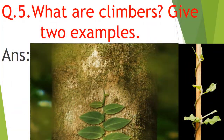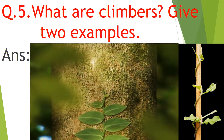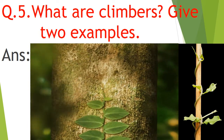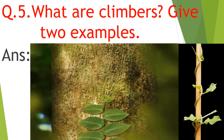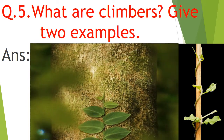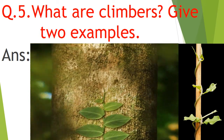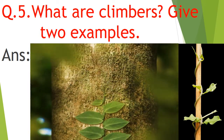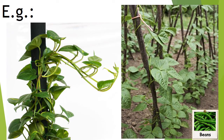Question number five: what are climbers? Give two examples. Plants having weak stems which cannot grow erect on their own are called climbers. You can see in the picture it has a weak stem and cannot grow erect on its own — those are called climbers. Example: money plant, beans.